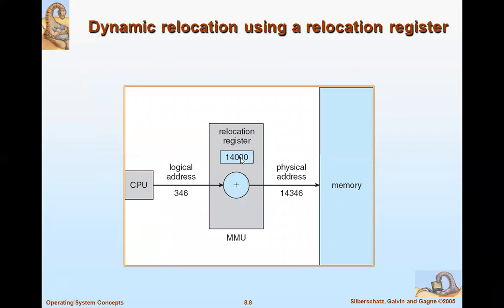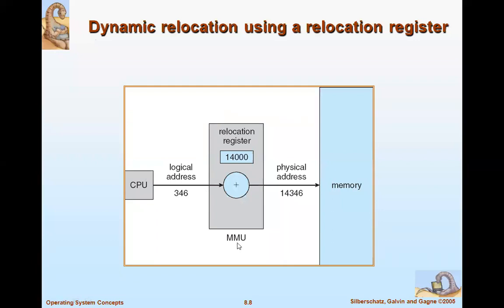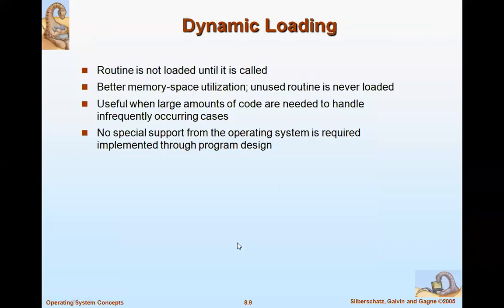For example, if the base address of process P1 is 14,000, and you are looking for a part of the process with logical address 346, then 14,000 + 346 = 14,346. That physical location in memory gives you the required data for execution. The CPU needs the data from primary memory, so both logical and physical addresses are mapped through the MMU.